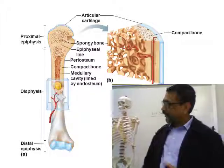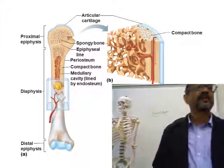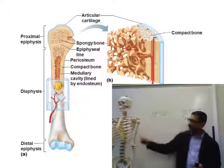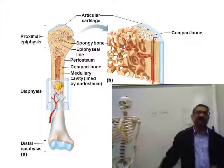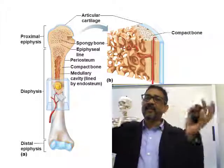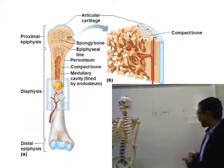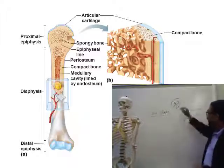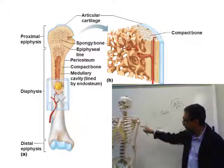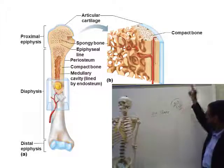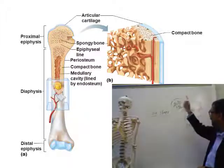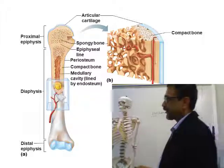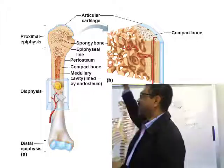A long bone has three parts: a shaft in the middle and two ends. The shaft part is called the diaphysis and the ends are called the epiphyses. Since there are two ends we say epiphyses (plural) and only one shaft, so we say diaphysis. If referring to only one end, we say epiphysis.